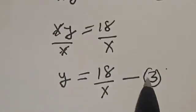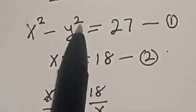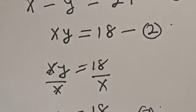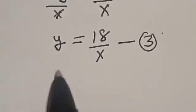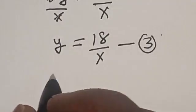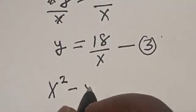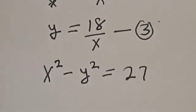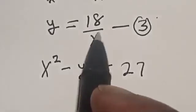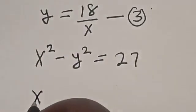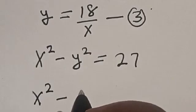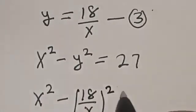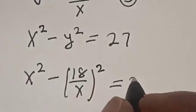Now substitute equation 3 into equation 1. That is, anywhere you see y, put 18 divided by x. So equation 1 becomes: x squared minus (18 divided by x) squared is equal to 27.